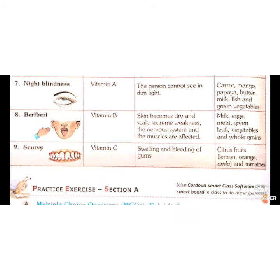Beriberi is a disease in which skin becomes dry and weak, and the nervous system and muscle cells are also affected. It is caused due to deficiency of vitamin B. Vitamin B is found in milk, eggs, meat, green leafy vegetables, and whole grains.